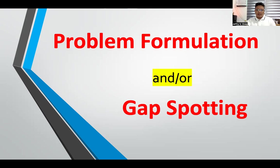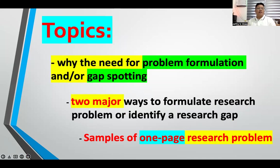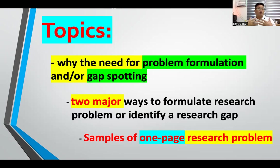There are three major topics that I will discuss in this video lecture. First is why the need for problem formulation and gap spotting — I will explain briefly why researchers need to clearly articulate the problem they want to address in the proposed research or the gap they want to fill. The second major topic is the two major ways to formulate a research problem or identify a research gap.